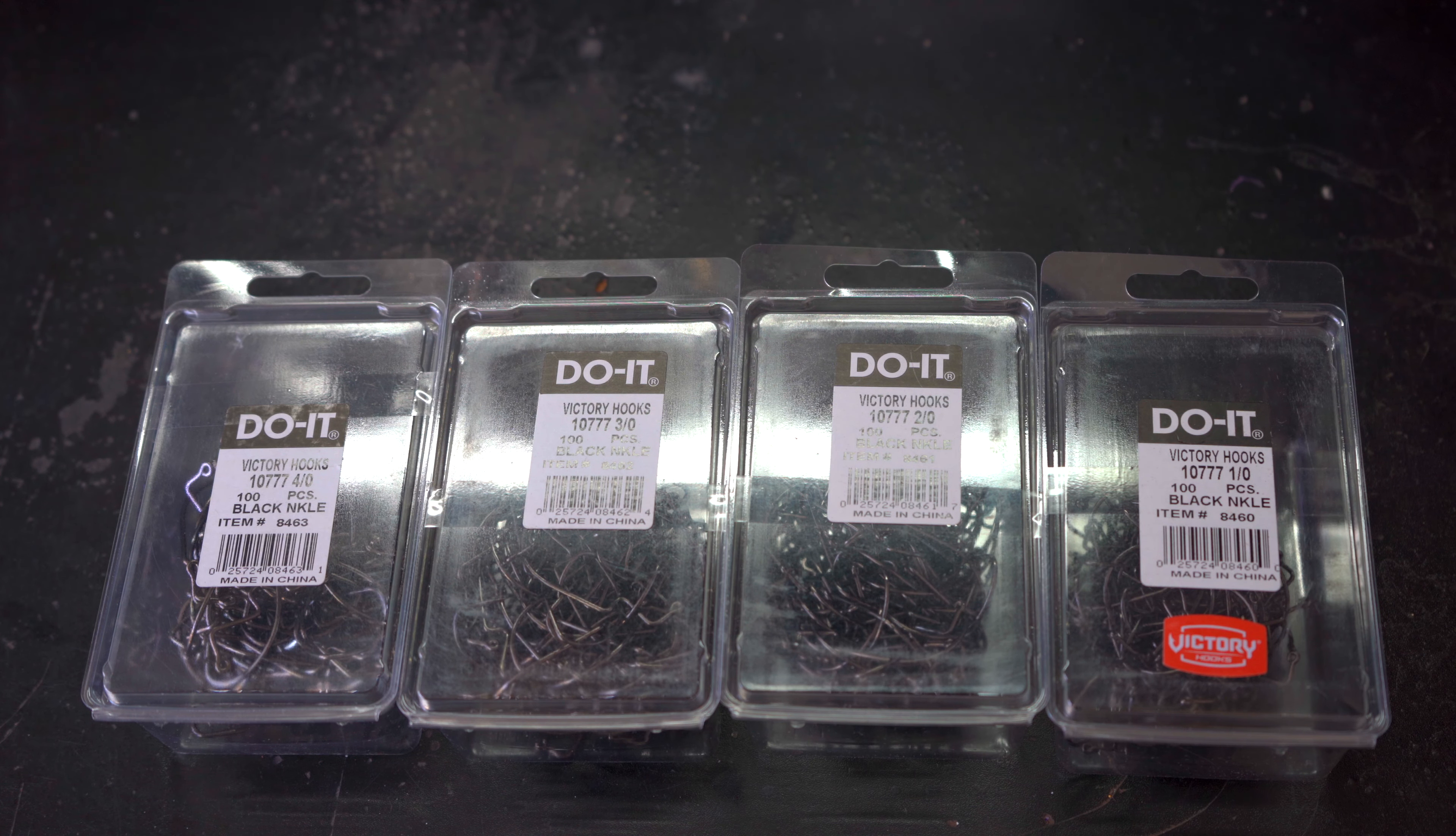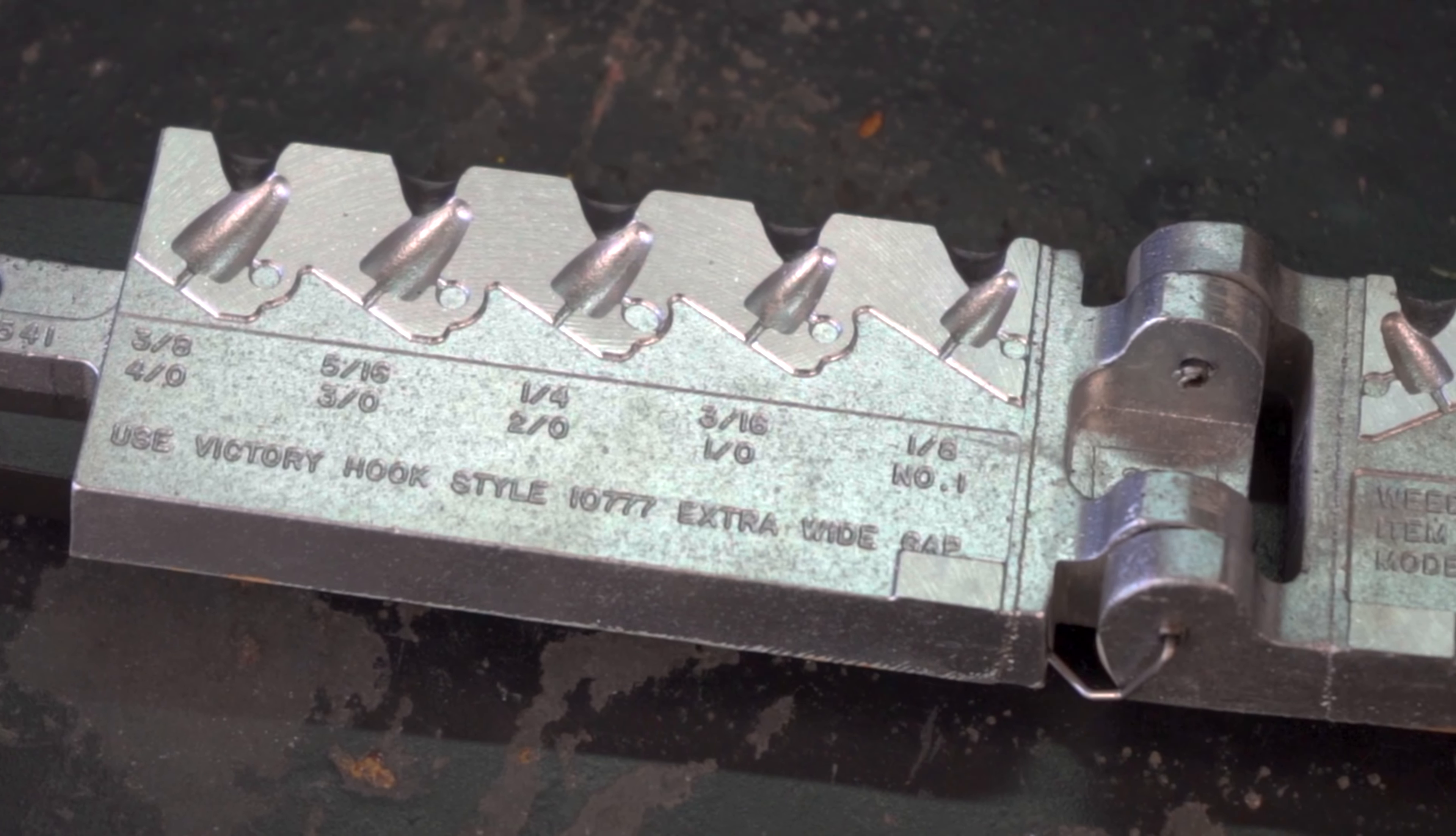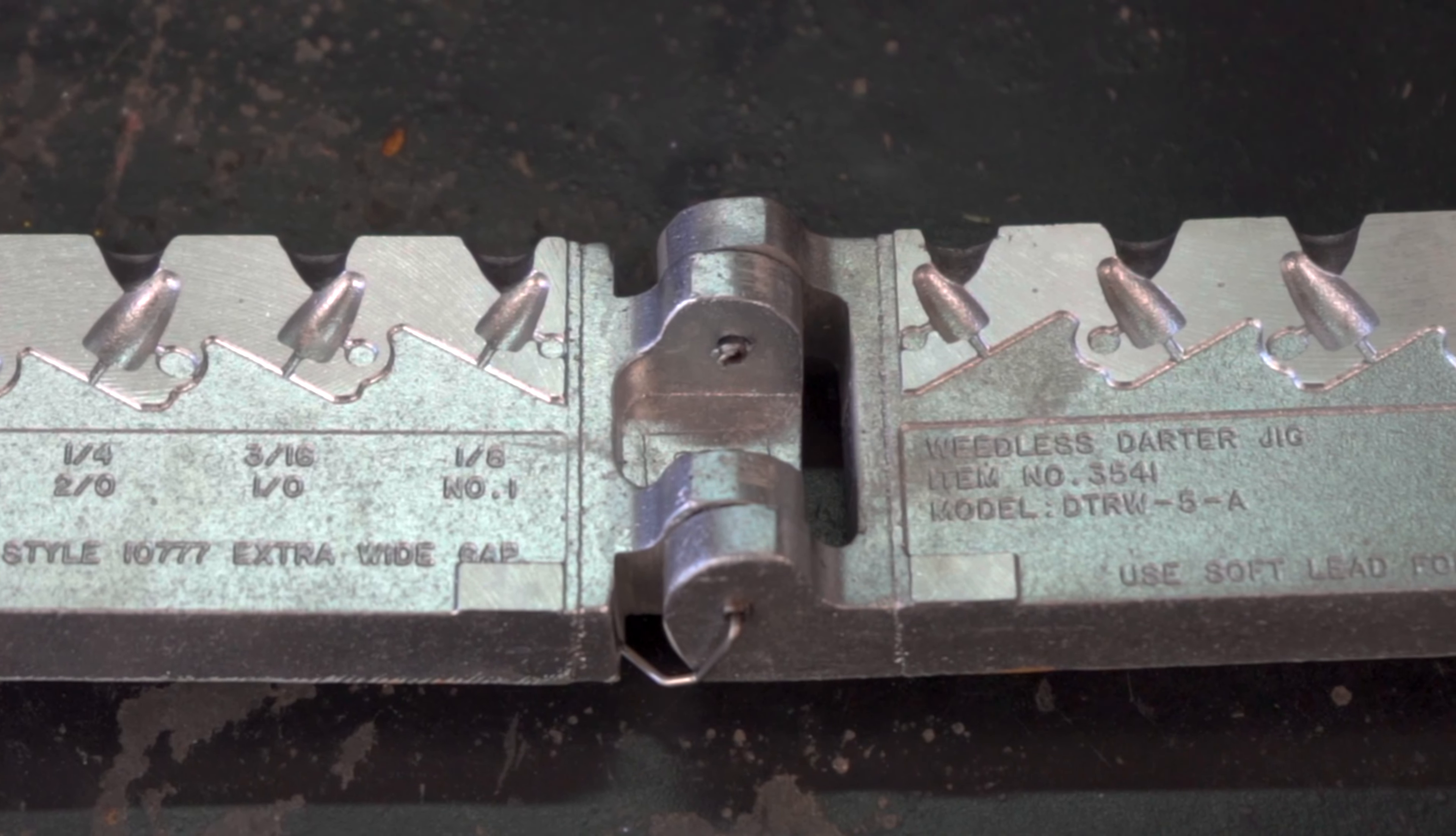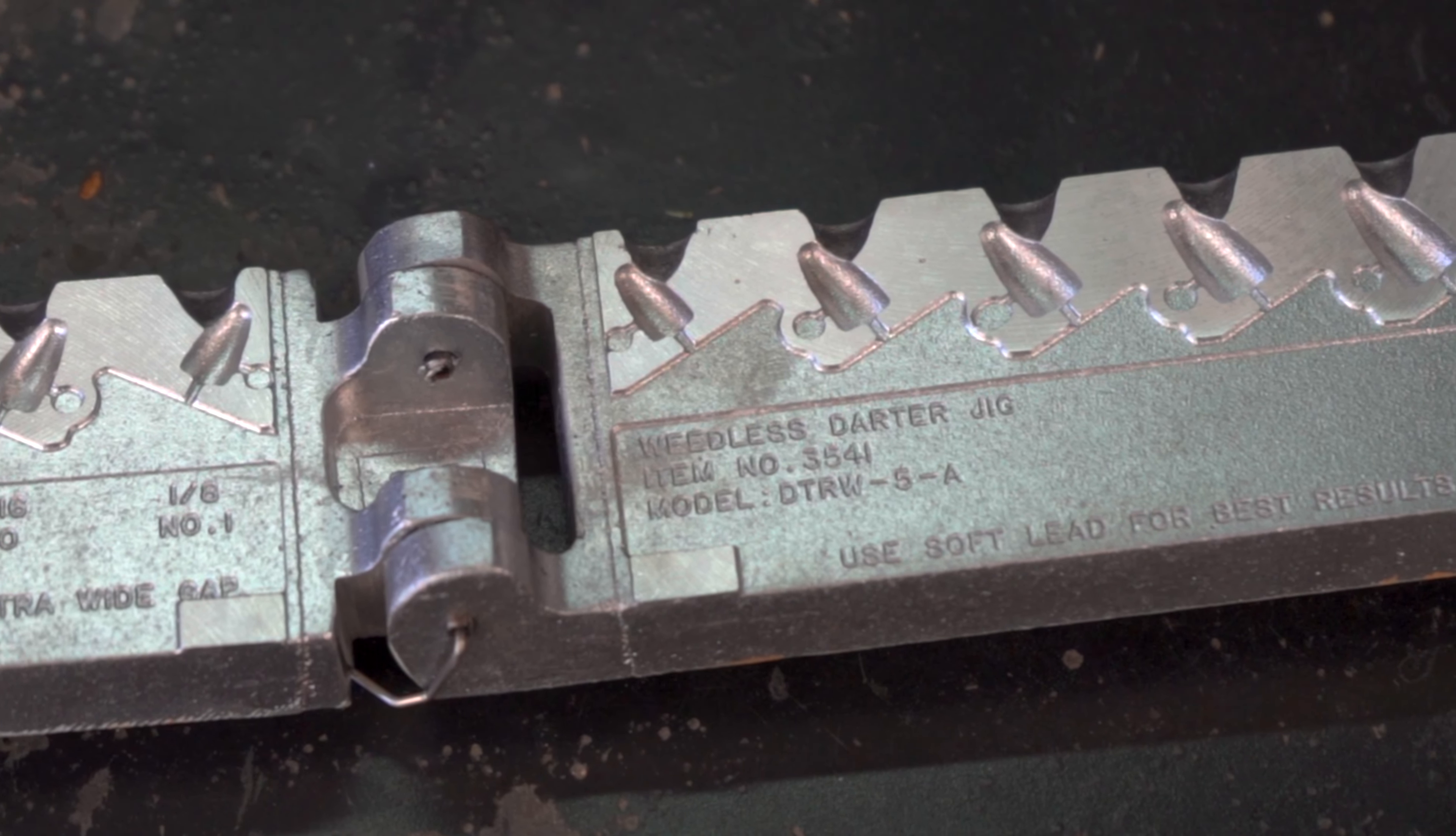The Weedless Darter Jig Mold takes the Victory 10777 hook and it takes the one-aught size all the way up to the four-aught size. This mold will make five different size Weedless Darter Jigs. You can make one-eighth all the way up to three-eighth. The one-eighth takes the number one hook and the three-eighth takes the four-aught hook.